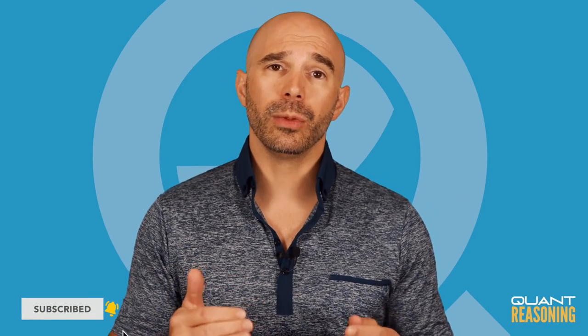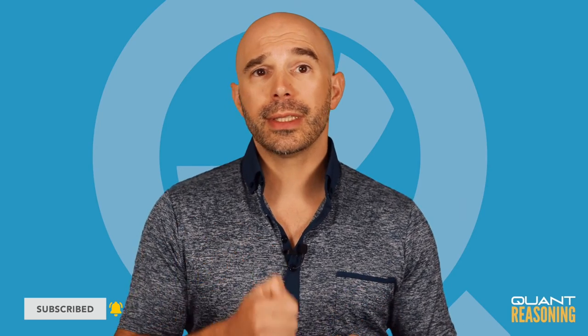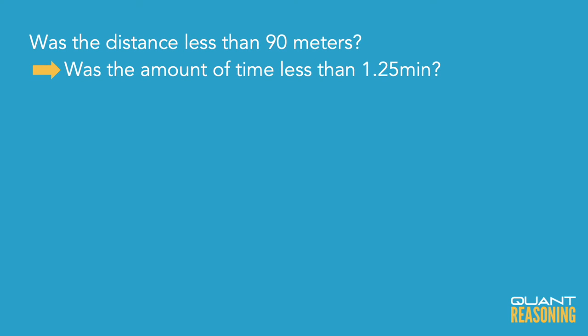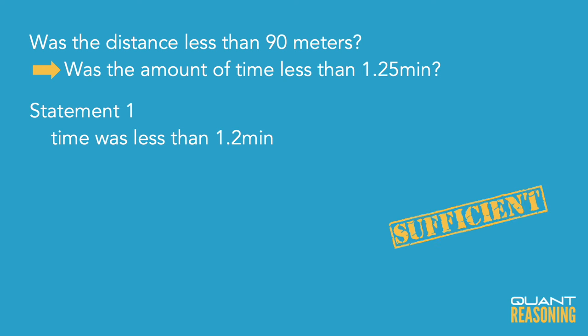So this question is really asking: was the amount of time less than 1.25 minutes? That whole conversion could take close to two minutes, and that's perfectly fine. Now we can evaluate the statements very quickly. Statement 1 tells us the time was less than 1.2 minutes — does that mean it's less than 1.25 minutes? Yes, any number below 1.2 is below 1.25. So Statement 1 is sufficient, and we eliminate B, C, and E, leaving A or D.